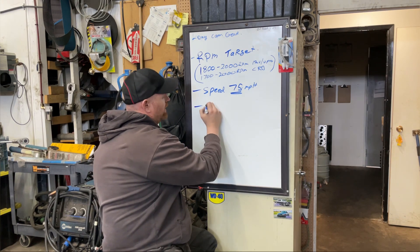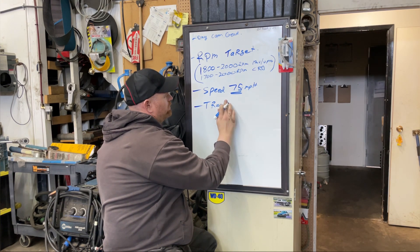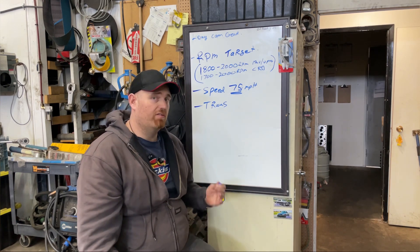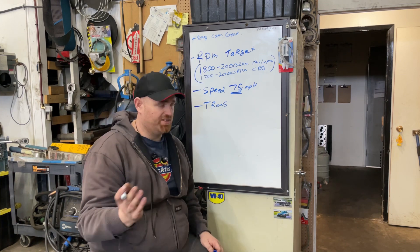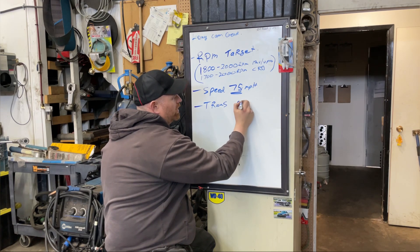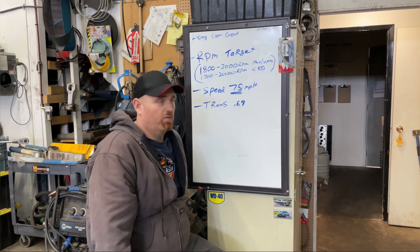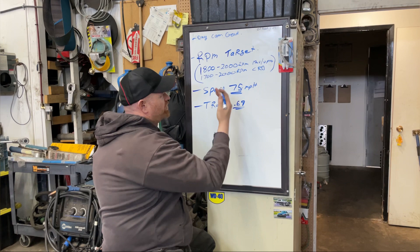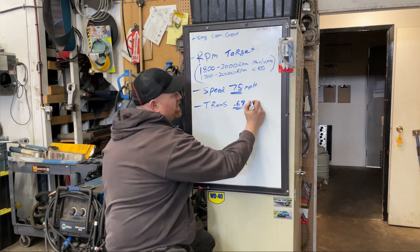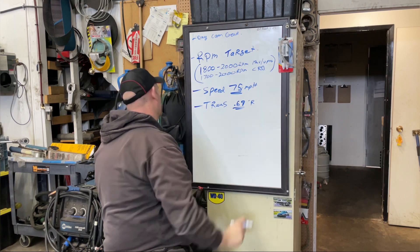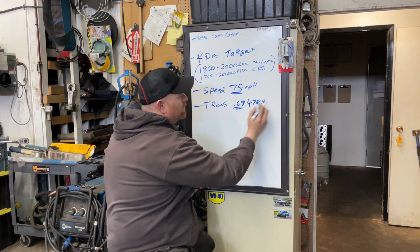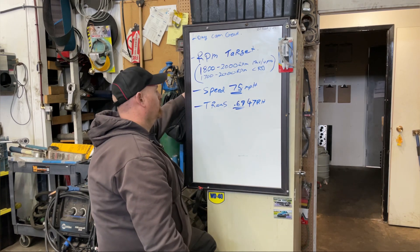The next thing you need to know is what gear ratio your transmission has. I have a 47RH - the 48RE is the same - and my final gear ratio in overdrive is 0.69. You need to know this number. Whatever transmission you have, you need all of these numbers to figure this out properly. The 47RH is the same as all the four-speed Dodges.